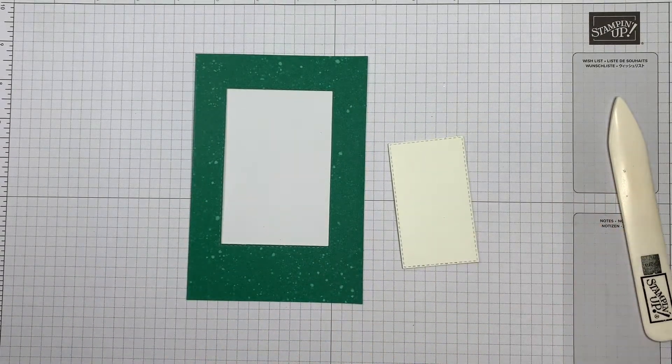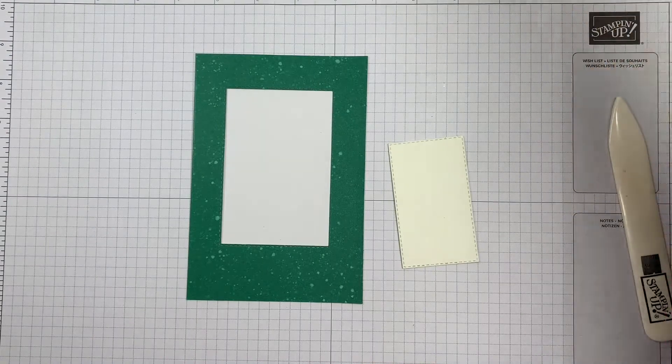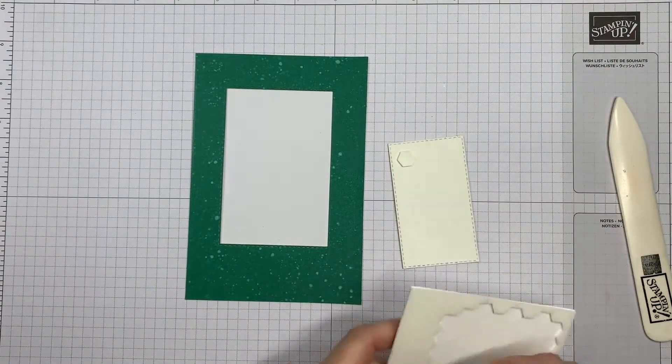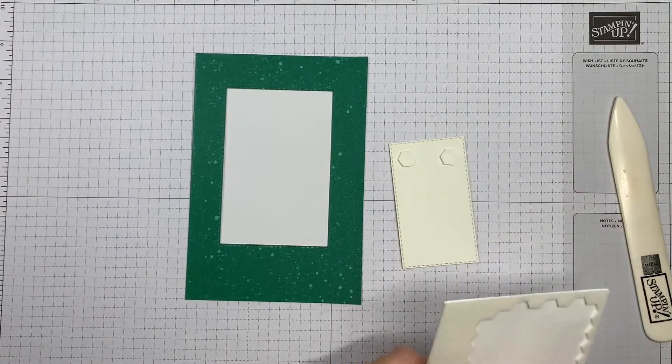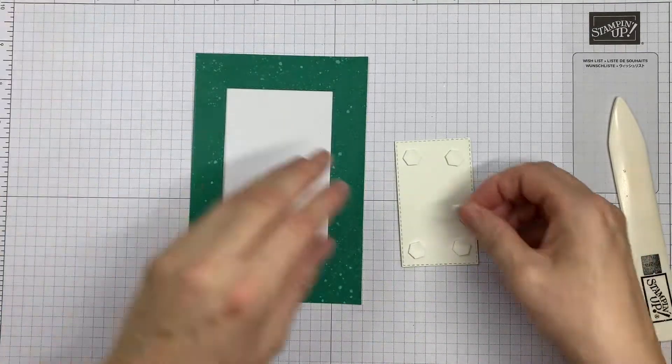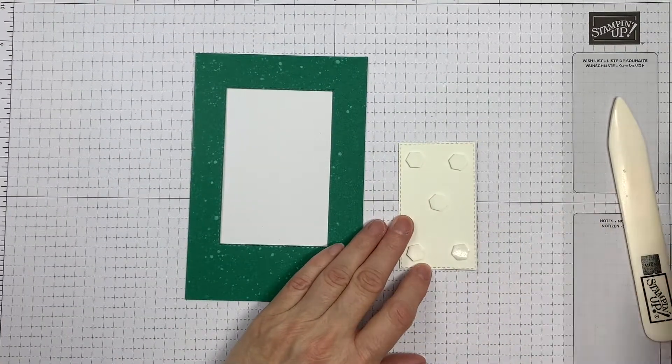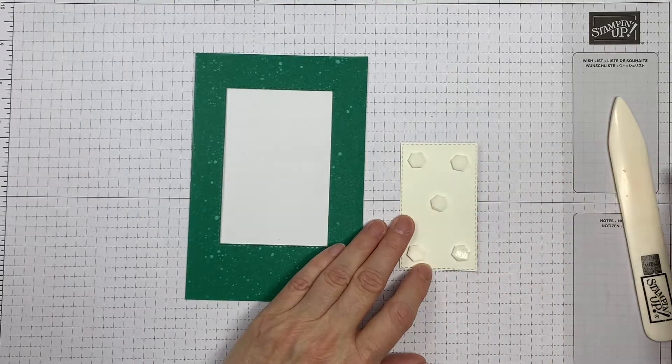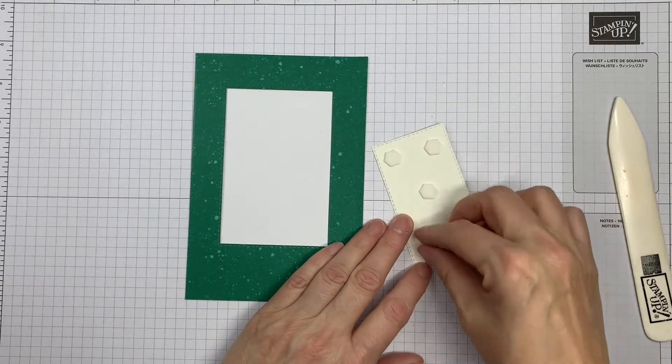The reason being we're going to pop this in with dimensionals, and I just wanted to make sure that there was some space around it. So we've got a nice little window in our card and that extra piece that's die cut from the front that we can keep for another project.